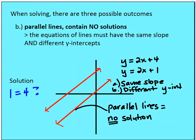The second outcome is if you have two parallel lines — they don't intersect. These equations must have the same slope and different y-intercepts. So if I have two equations with the same slope of two but different y-intercepts of four and one, I have two parallel lines and you'll end up with a solution that's nonsensical — something like one equals four — which means there's no intersection and no solution.